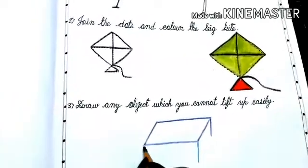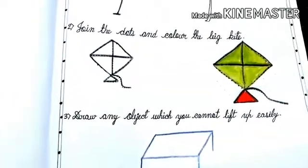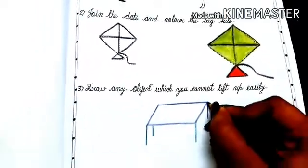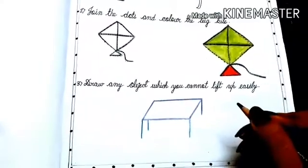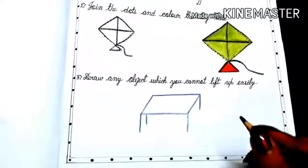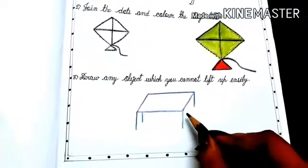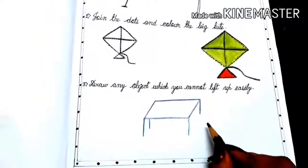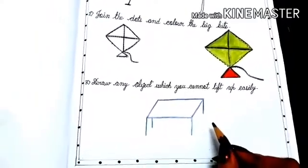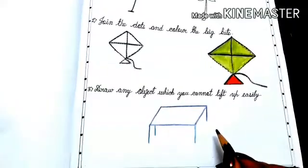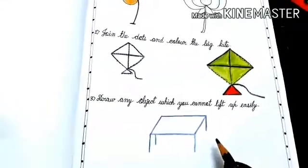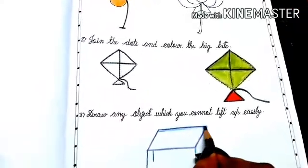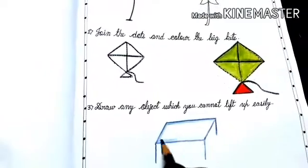Do you understand what I am drawing? Yes correct you are. I am drawing a table because I cannot lift it up easily. Now you also have to draw any one object which you cannot lift up easily and then what you have to do? Yes right you are, you have to color the object. Now color the table.